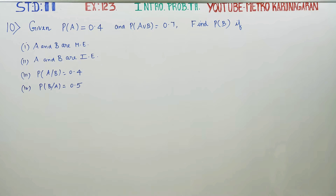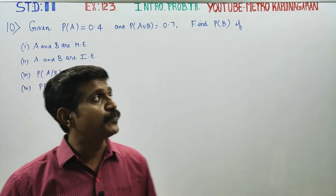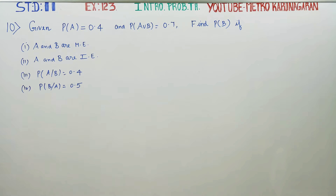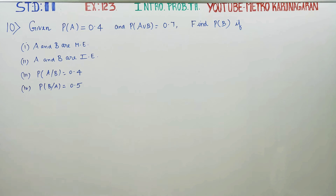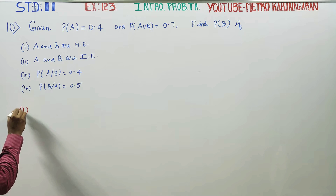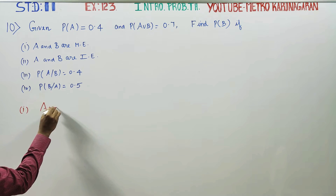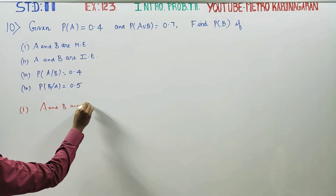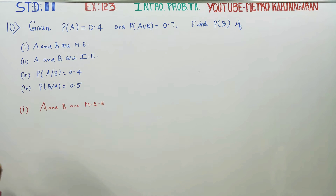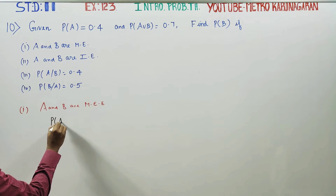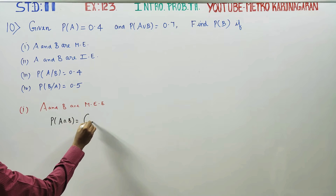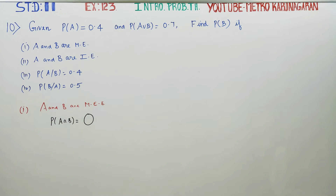Dear 11th standard students, in Exercise 12.3, Sum number 10: Probability of A is equal to 0.4, P(A∪B) is equal to 0.7. Find the probability of B if A and B are mutually exclusive events. For mutually exclusive events, P(A∩B) is equal to 0.